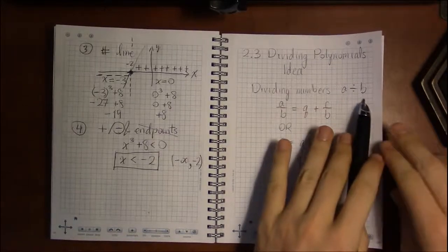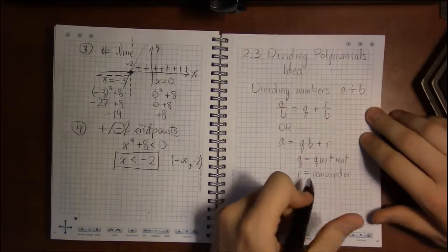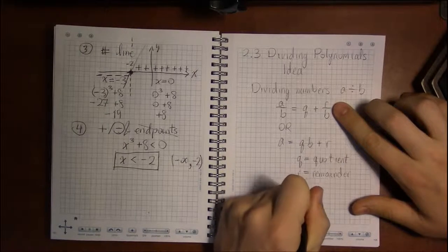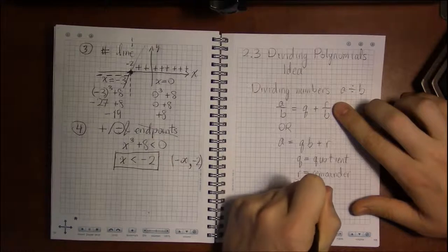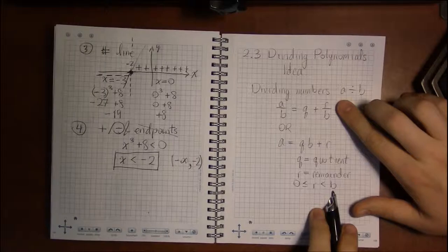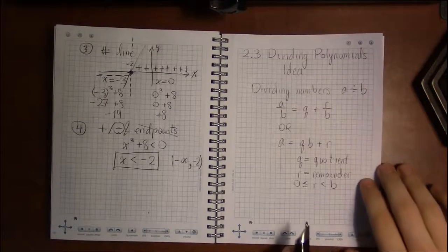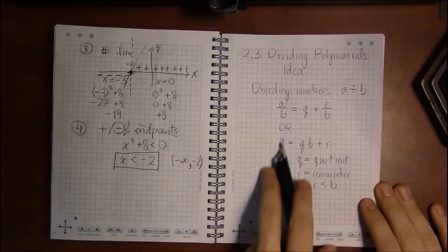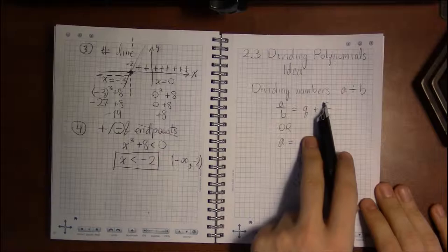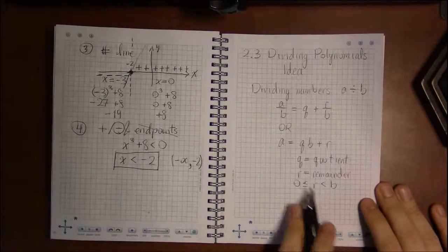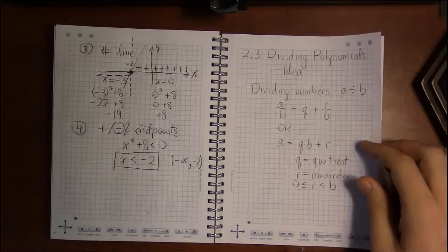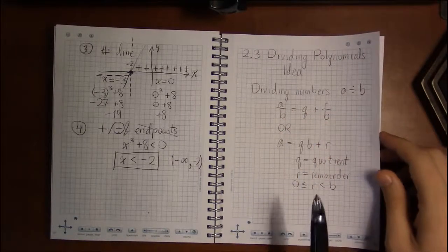And of course we don't want B to be zero, and we can say things like the remainder is going to be somewhere between 0 and B, but it's not going to be any larger than B. This is what we get when we divide numbers. Dividing polynomials is going to look very similar to this. Instead of numbers, though, we're just going to have polynomials in X.